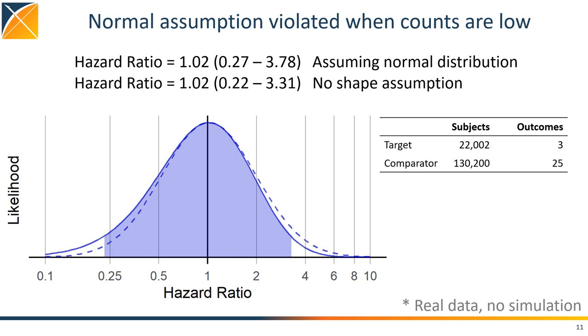Well, one rather big problem with that approach is that it assumes the likelihood is normally distributed, and this assumption can be violated when counts are low. And by counts I mean the number of outcomes, not the number of subjects.